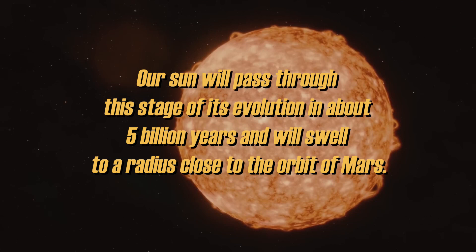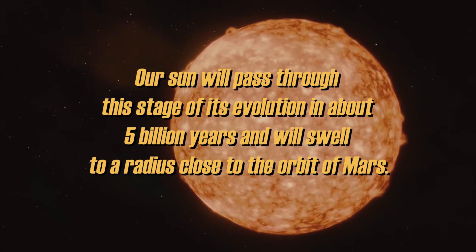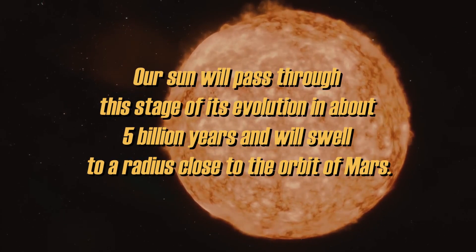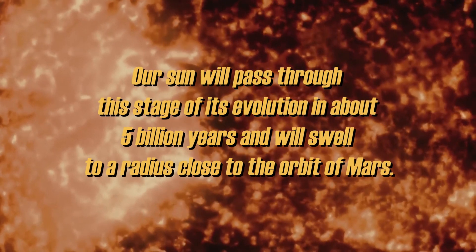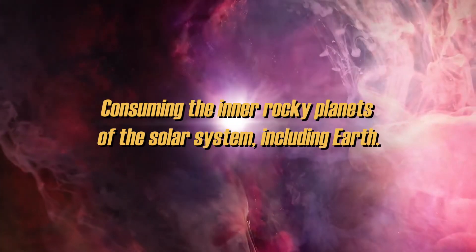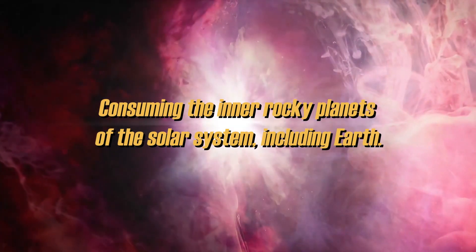According to Neil deGrasse Tyson, our Sun will pass through this stage of its evolution in about 5 billion years and will swell to a radius close to the orbit of Mars, consuming the inner rocky planets of the solar system, including Earth.